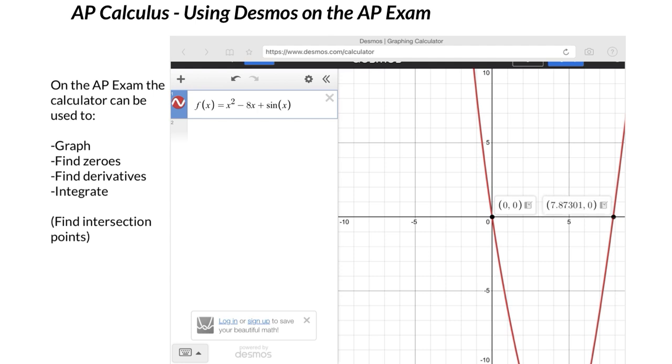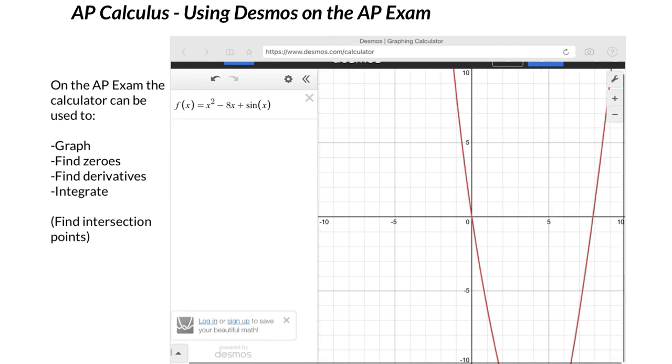In terms of finding zeros, if you literally just either use your finger or your mouse and press, there are the zeros. It's just that easy.